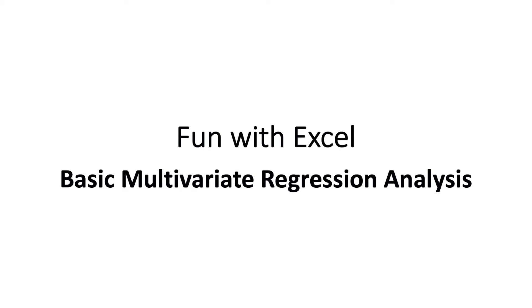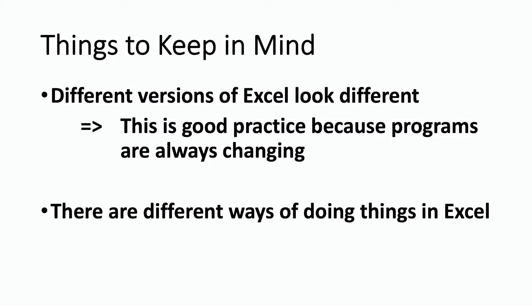Greetings folks, welcome. In this video, we're going to have some fun in Excel. We're going to do some basic multivariate regression analysis where we look at the effects of several explanatory variables on U.S. industry employment change between April of 2019 and April of 2020, so over a year's time. But before I get into it, I just want to remind you of some caveats or things to keep in mind when we use Excel.